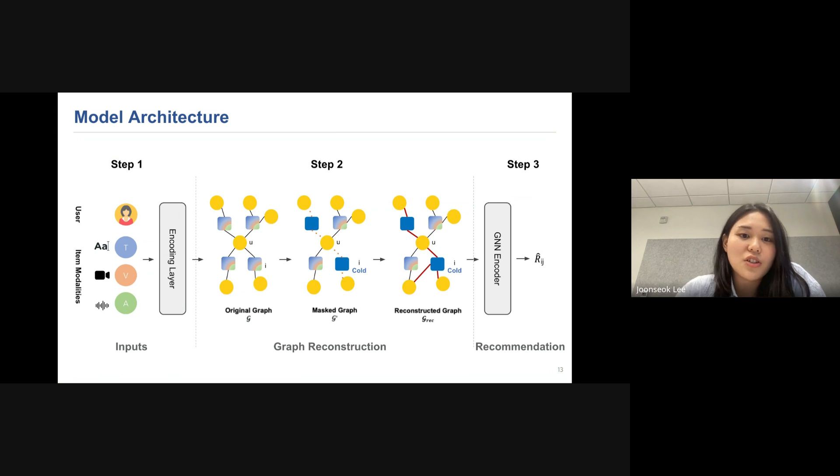This is the overall model architecture and it consists of three parts. First, the user and item modalities go as input and fit into the encoding layer. Then using the user and item node representation, we generate the user-item bipartite graph G. Then we make certain items as cold items and mask all the associated edges to make mask graph G prime. Then using our novel approach, we will reconstruct the edges to generate reconstructed graph called G-REC. And this will be fit into GNN encoder and perform recommendation. I'll talk about the details in each step.